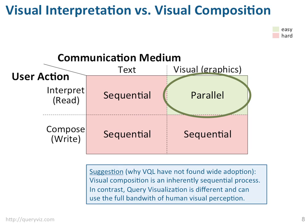So a major suggestion of this talk — and this is a major point about why visual query languages have not found widespread adoption — is that visual composition is an inherently sequential process. Can it be that the saying should be: a picture says more than 1000 words, but creating a picture needs more than 1000 seconds? And if this is the case, then maybe visual constructs may not be ideal for helping us compose new queries, but they are ideal for helping us interpret existing queries.